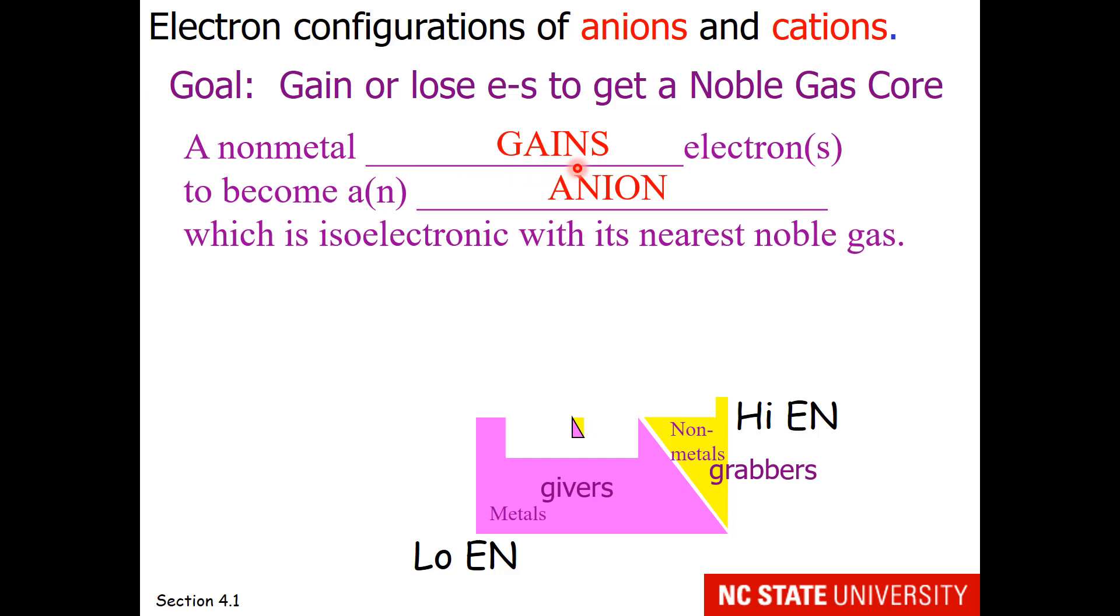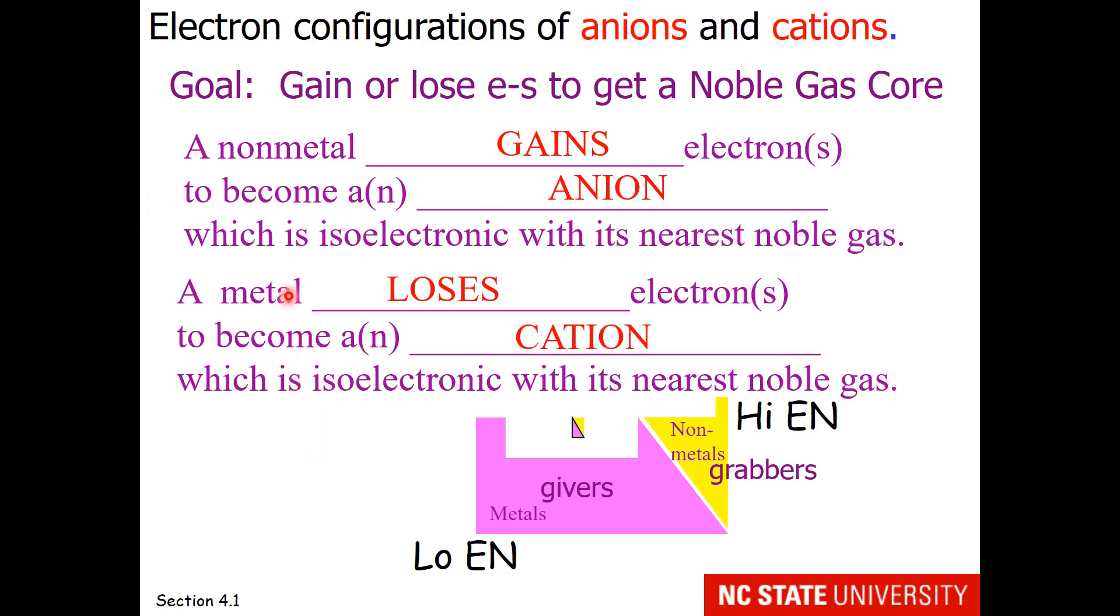So a non-metal gains electrons, and in doing so becomes an anion, which is isoelectronic with its nearest noble gas. A metal loses electrons to become a cation, which is isoelectronic with its nearest noble gas.